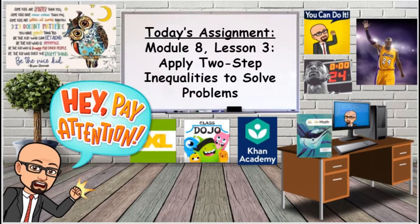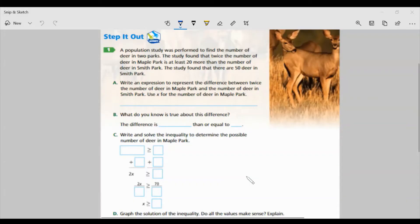Let's go ahead and look at our first task. A population study was performed to find the number of deer in two parks. The study found that twice the number of deer in Maple Park is at least 20 more than the number of deer in Smith Park. The study found that there are 50 deer in Smith Park. Part A: Write an expression to represent the difference between twice the number of deer in Maple Park and the number of deer in Smith Park. Use X for the number of deer in Maple Park.